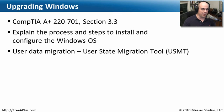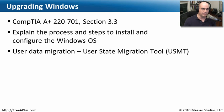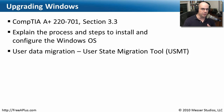We've already gone through installing Vista, installing Windows XP, and installing Windows 2000. Now we need to be able to upgrade the Windows operating system, and one of the pieces of that is not just the upgrade itself, but there's also something called the User State Migration Tool. We're going to learn about what that is and how it can help you migrate someone from an older operating system to a new one.